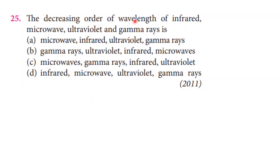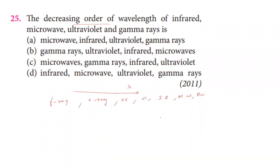The decreasing order of wavelength of infrared, microwave, ultraviolet, and gamma rays: microwave has the longest wavelength, followed by infrared, then ultraviolet, and gamma rays have the shortest wavelength. So the correct decreasing order of wavelength is microwave > infrared > ultraviolet > gamma rays. The first option is correct.